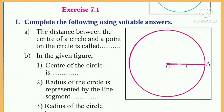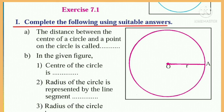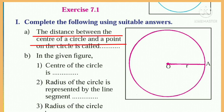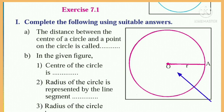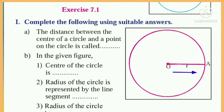The next section is Exercise 7.1. First, complete the following using suitable answers. Question A: The distance between the center of the circle and a point on the circle is called dash. In this figure, we can see the distance between the center O and point A on the circle. This distance is called the radius.